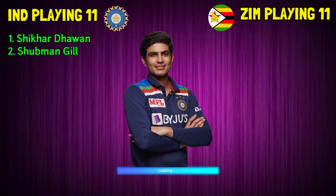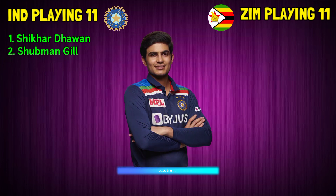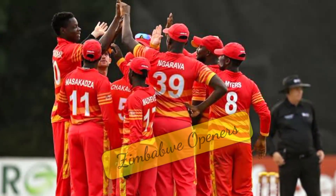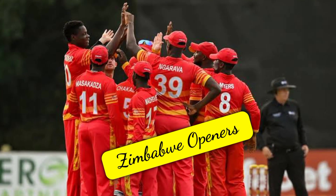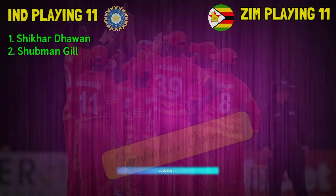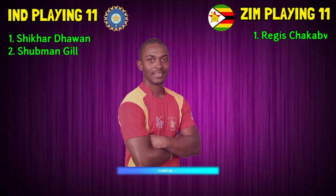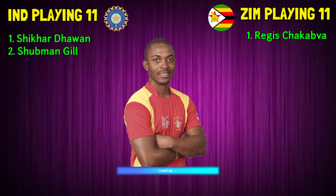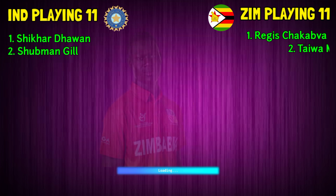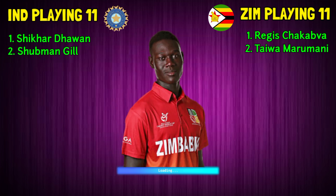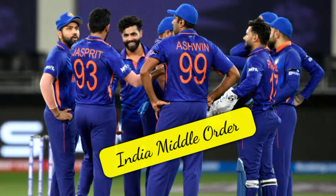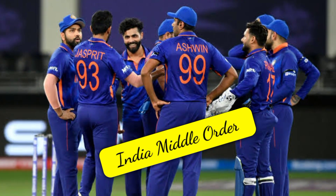No.2 Shubman Gill, right-handed batsman. Zimbabwe team, open a list: No.1 Regis Chakabva, right-handed batsman. No.2 Ted Yansi Marumani, right-handed batsman.